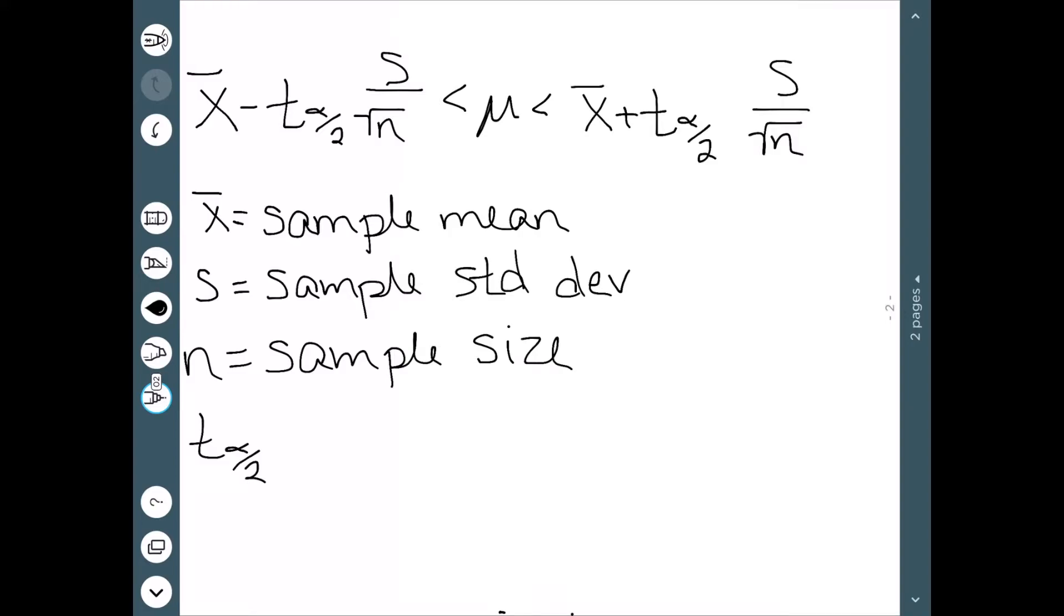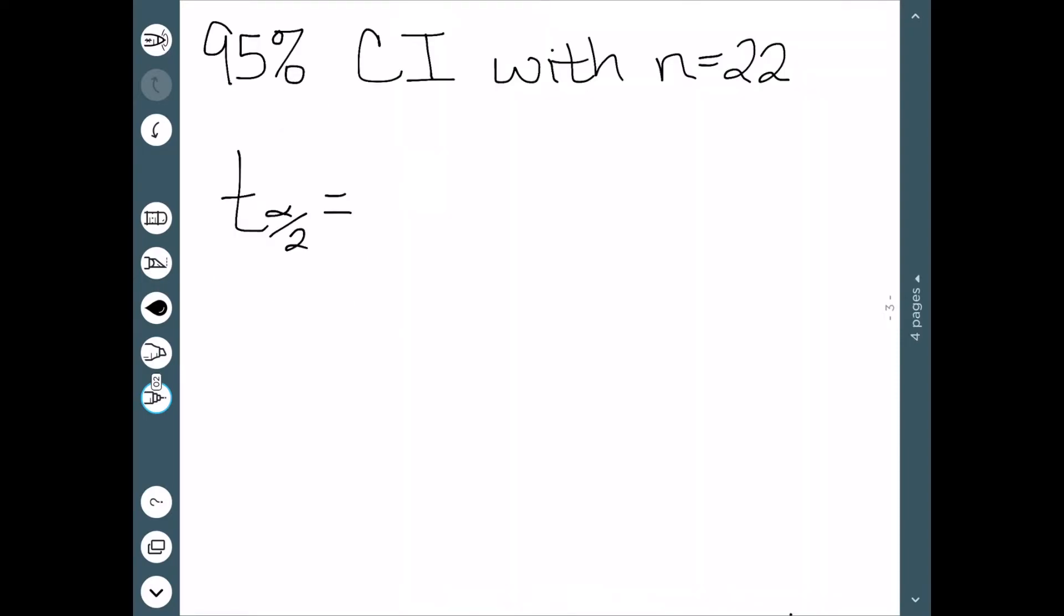And then finally, we have this t of alpha over 2. Whenever we were dealing with our confidence intervals before, we had a z instead of a t. We had set values for the z depending on the size of our confidence interval. The value of t will also depend on the level of confidence we have. Do we want a 95% interval, a 90% interval, etc.? And it's going to come from a table similar to the z table.